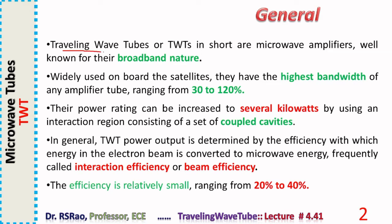Traveling wave tubes (TWTs) are microwave amplifiers well known for their broadband nature. They are widely used on board satellites and have the highest bandwidth of any amplifier tube.